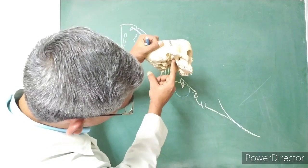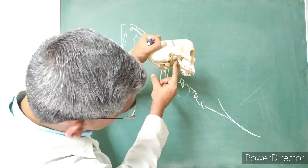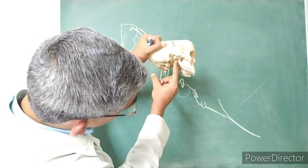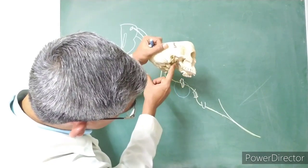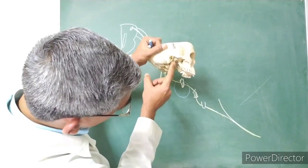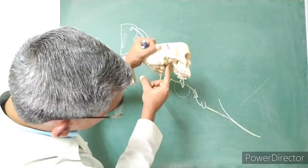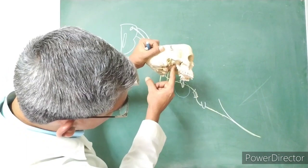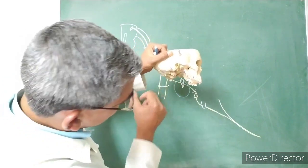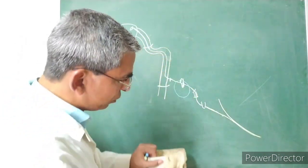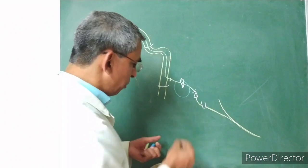Posteriorly, there is the otic ganglion at the mandibular notch region. So anteriorly, the chorda tympani nerve is related to the otic ganglion. These are the structures related to the chorda tympani nerve.